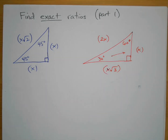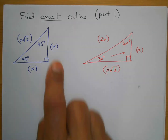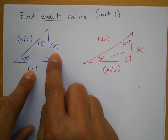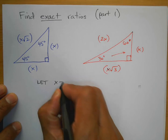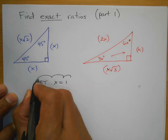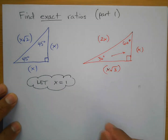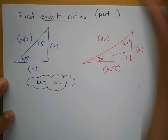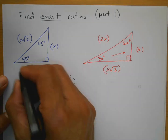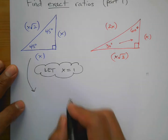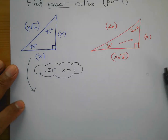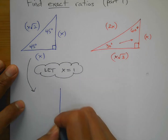For both of these triangles, when finding the exact ratios, we're going to choose x to equal 1. If we do that for both triangles, then the sides become specific exact values.